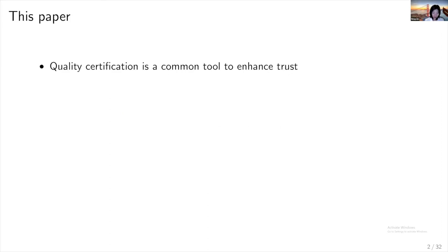Let me talk a little bit about the motivation. Quality certification is a common tool used by platforms to enhance trust in the marketplace, just as the use of reputation systems such as reviews and ratings. Quality certification is a very good way to mitigate information asymmetry and moral hazard problems. On the one hand, it helps consumers identify high quality sellers from low quality ones. On the other hand, it motivates sellers to exert effort.